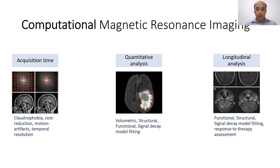Longitudinal analysis — comparing images of patients with cancer before and after treatment, assessing the efficacy of treatment, and the progression of diseases — are also important properties that need to be extracted from the MRI data.